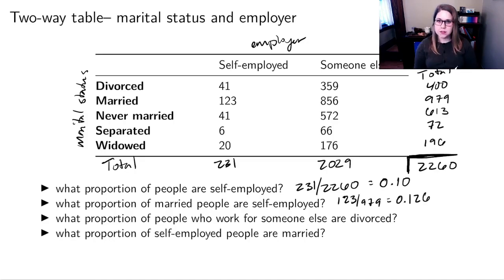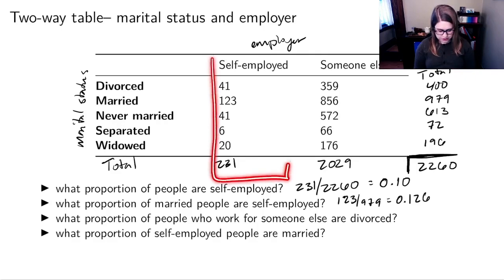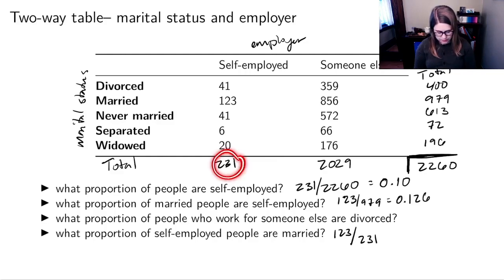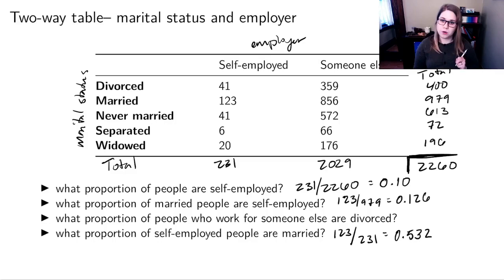Now for the last one: what proportion of self-employed people are married? For that one, we think about just the self-employed column — out of self-employed people, how many are married. That's 123 again, but the denominator is the total for self-employed people, which is 231. I got 0.532 for that proportion.